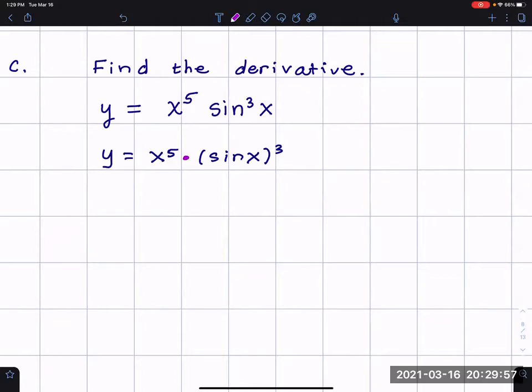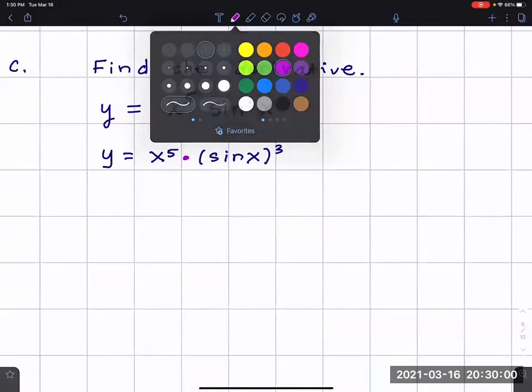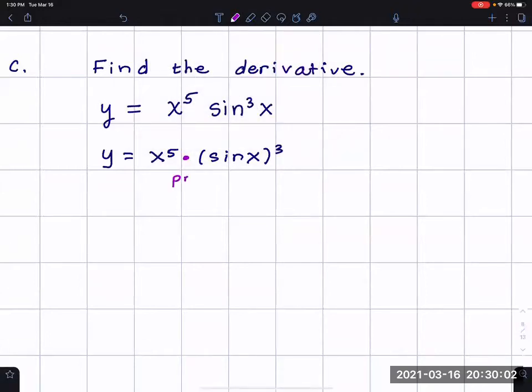x to the fifth and sine x to the third power. So the first step will be to use the product rule when I find the derivative. The product rule says I first take the derivative of x to the fifth, but then I leave the next function sine x to the third alone.